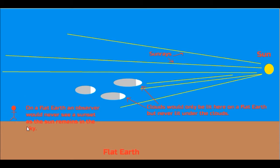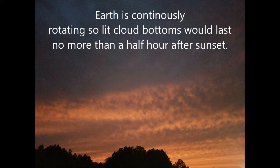On a flat earth, an observer would never see a sunset. The sun would shine on part of the clouds facing toward the sun, but never underneath, because the sun is still in the sky — if the earth was flat. Earth is continuously rotating, so cloud lit bottoms will last no more than half an hour after sunset.